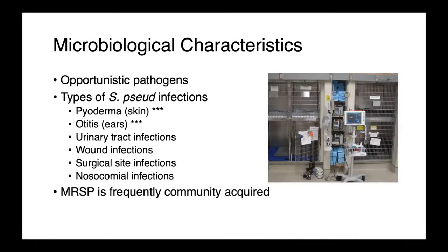What types of infections do we tend to see with methicillin-resistant staph in our companion animals? Pyoderma and otitis are going to be really number one and two — these are very, very common. Urinary tract infections, also frequently caused by staph pseudintermedius, wound infections, surgical site, nosocomial infections.